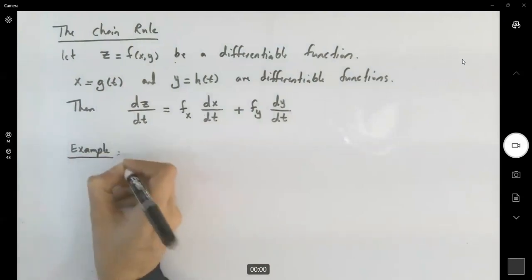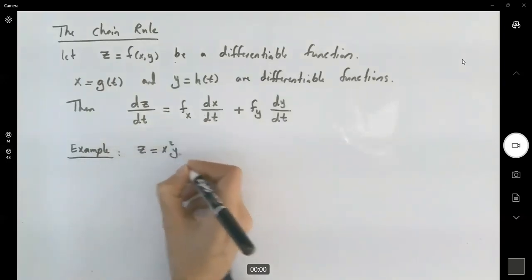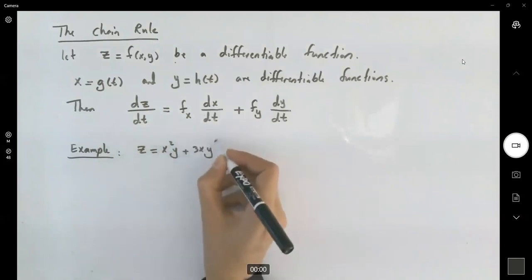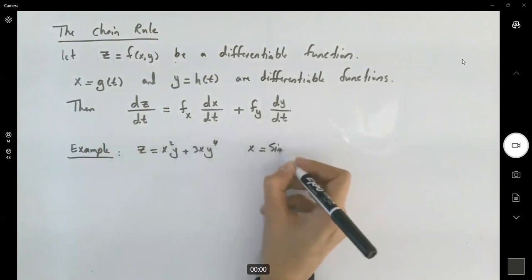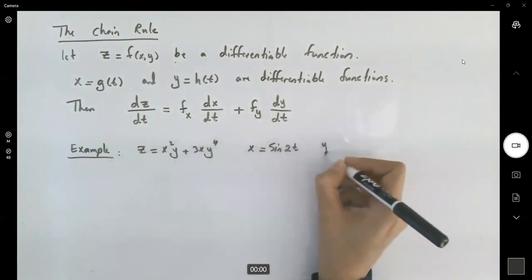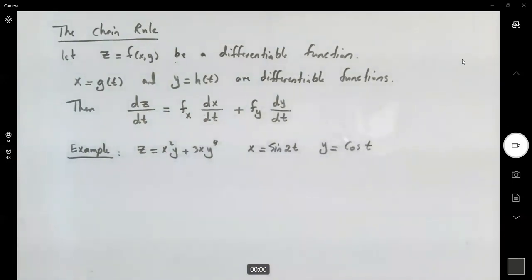Suppose I give you function z, which is x²y plus 3xy⁴. x is sin(2t) and y is cos(t).